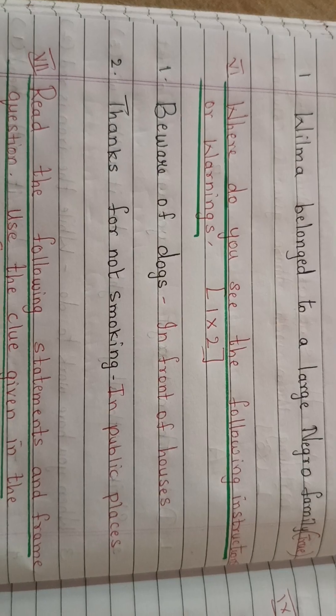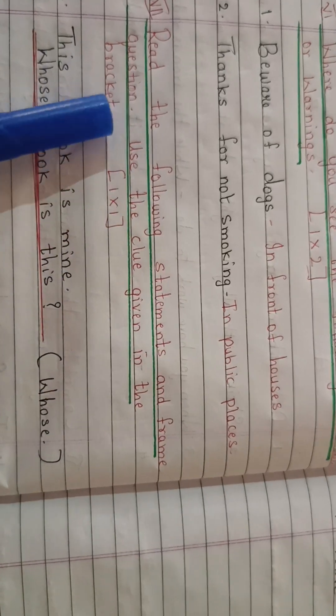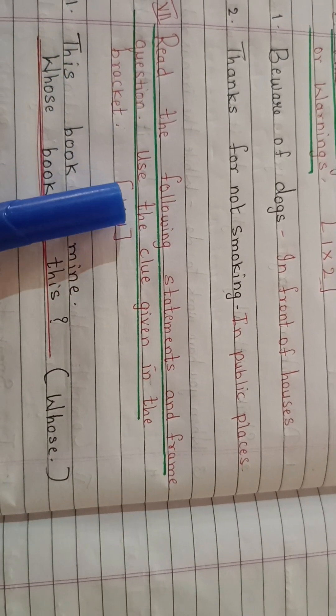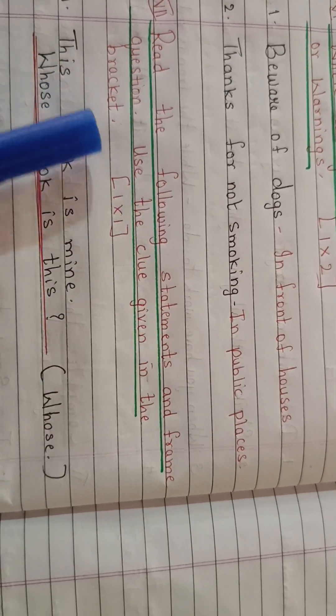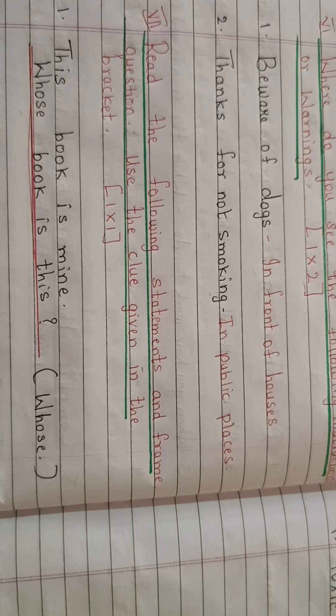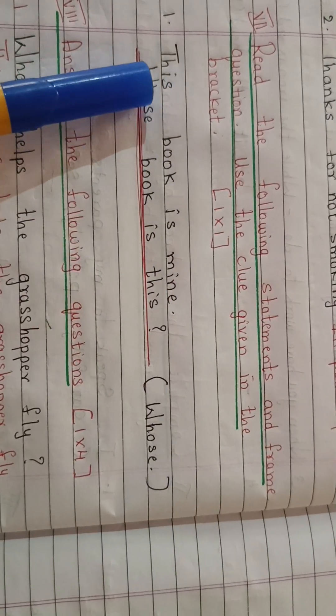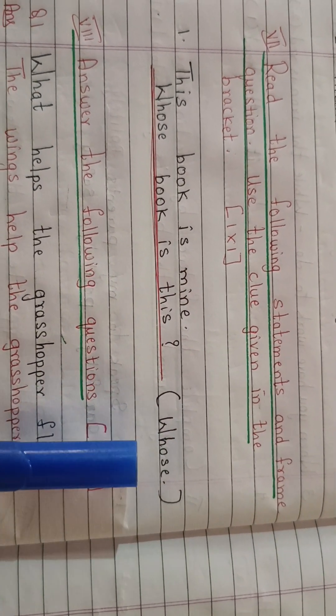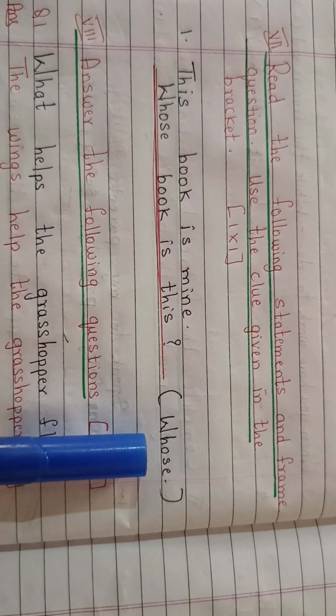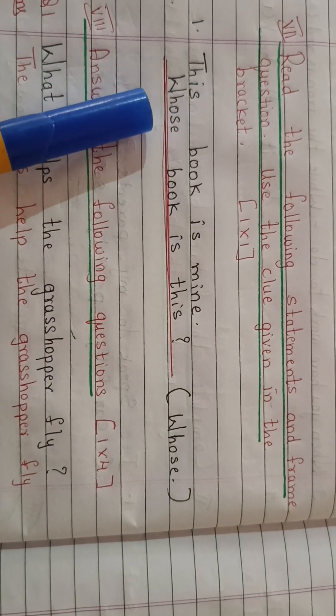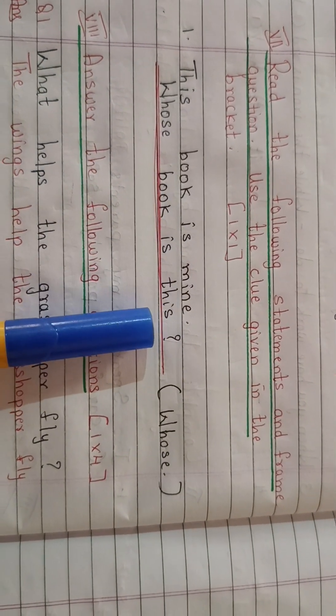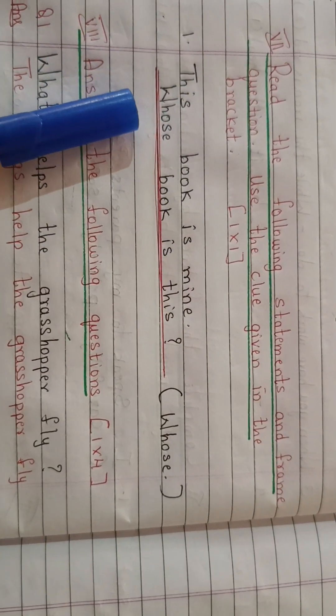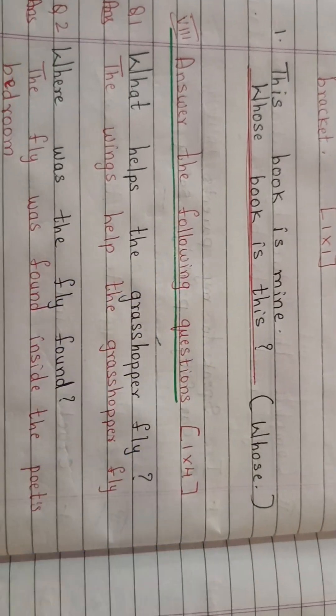Moving to the next one. Read the following statements and frame questions. Use the clue given in the bracket. So you have to frame a question. Read the statement first. This book is mine. So in the bracket you find the word given. So using this clue you have to frame a question. So the question is whose book is this? This book is mine. So question asked: whose book is this?